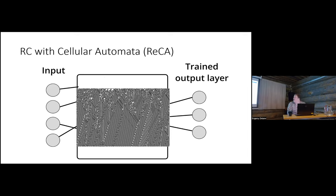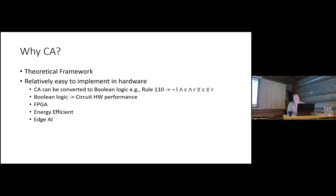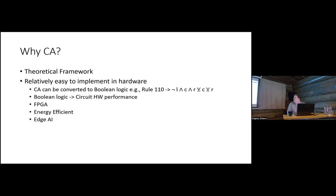Why cellular automata? There's a very nice theoretical framework around them that lets you build on a lot of existing information. Perhaps more importantly, simpler types of cellular automata can be converted into pure boolean logic gates, so the example I showed could be reduced to a single function running on every single cell continuously. This means you can implement them in circuitry — on FPGAs — making them energy-efficient and potentially valid edge AI methods.